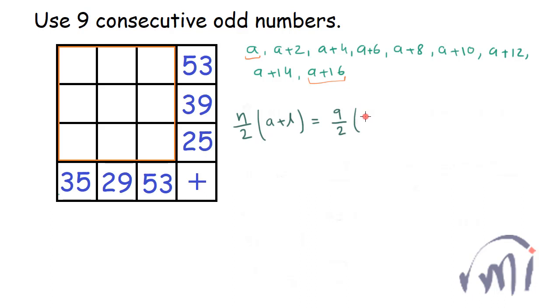First term is A and last term is A plus 16, and this is equal to the sum of these three numbers. So it is equal to 35 plus 29 plus 53.